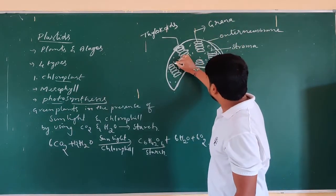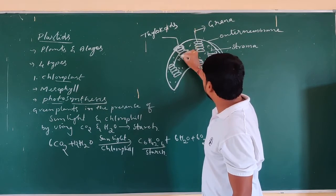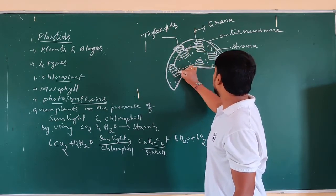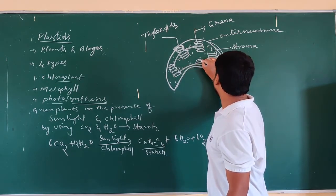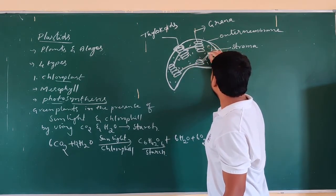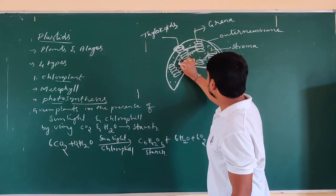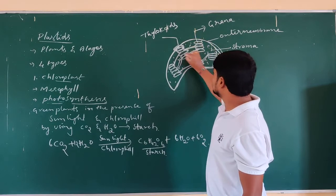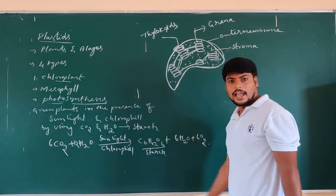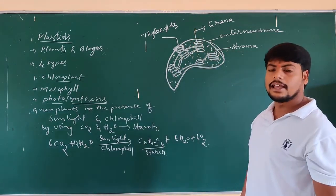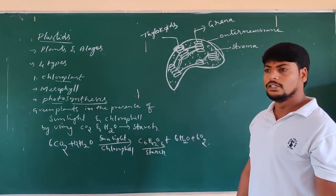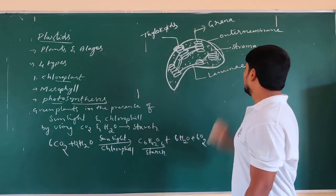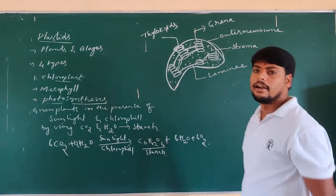All the grana are linked one by one by means of a thread-like structure called lamella. So lamella helps in connecting the grana. In this way, the chloroplast found in the leaf is essential in the synthesis of food, with lamella connecting the thylakoid membranes.